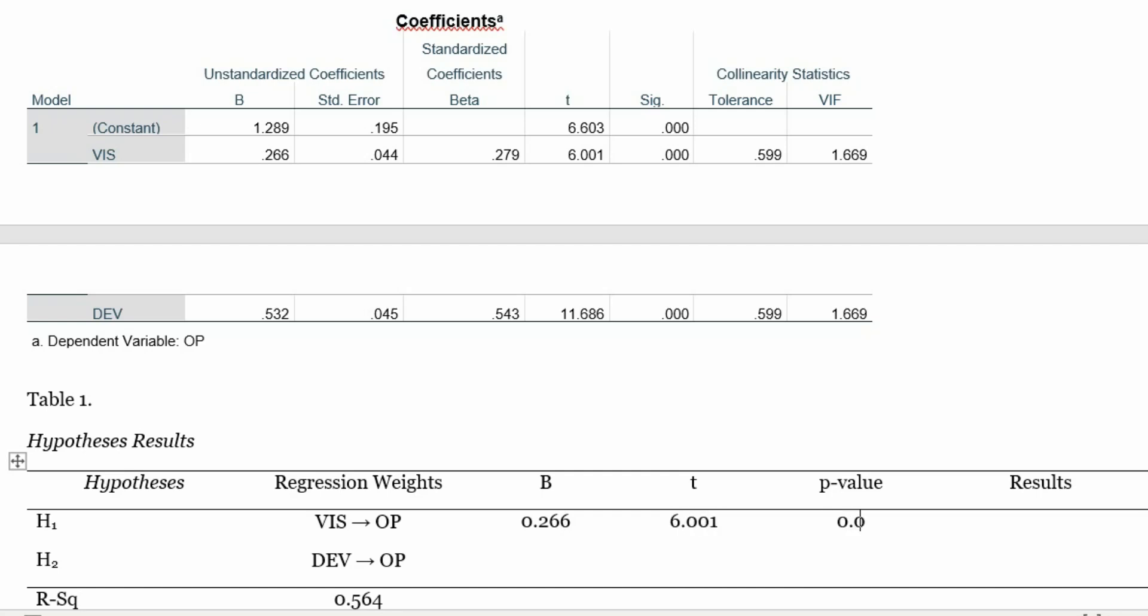The t-value is 6.001. The p-value is 0.000. Here it is for vision and similarly you can do it for development as well. 0.532, t-value is 11.686 and the p-value is 0.000 and both results are supported.